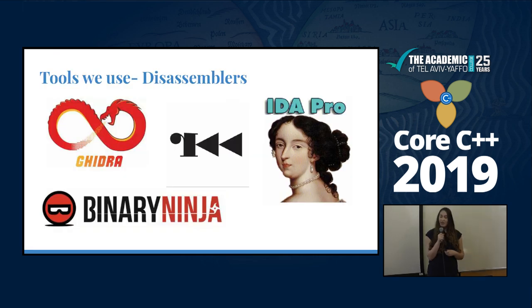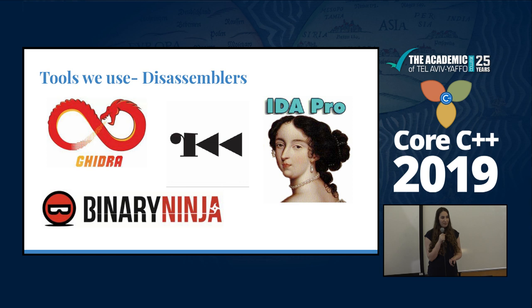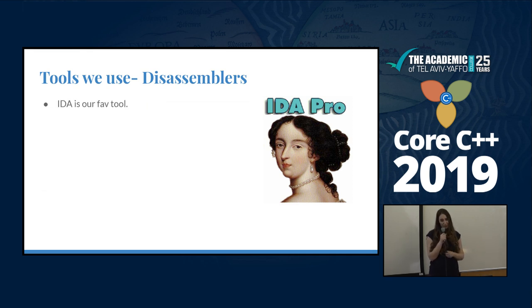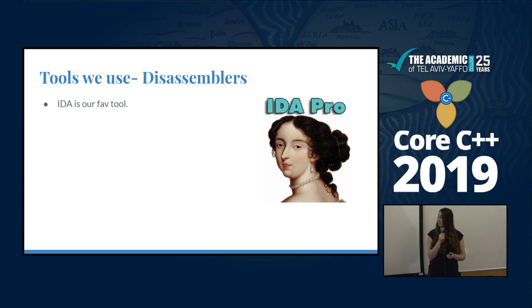We have some options for disassemblers: Radar2, Ghidra, Binary Ninja, and also IDA Pro. They are all different in how much they cost and the options they provide. In our case we are going to use the IDA tool. IDA Pro is my favorite disassembler and this is what we are going to use in our talk today.